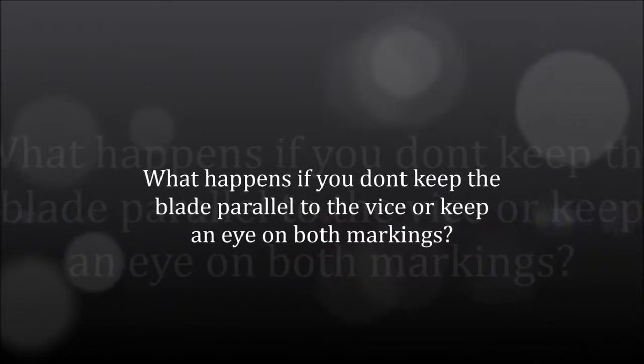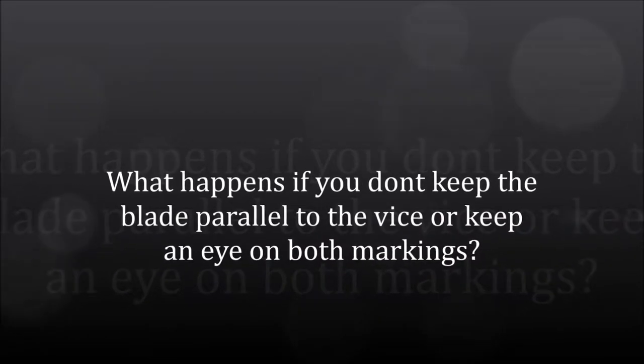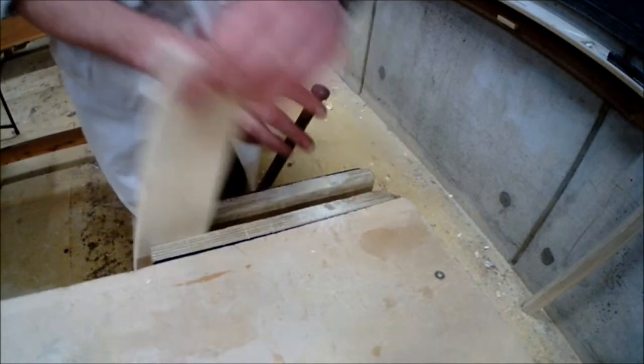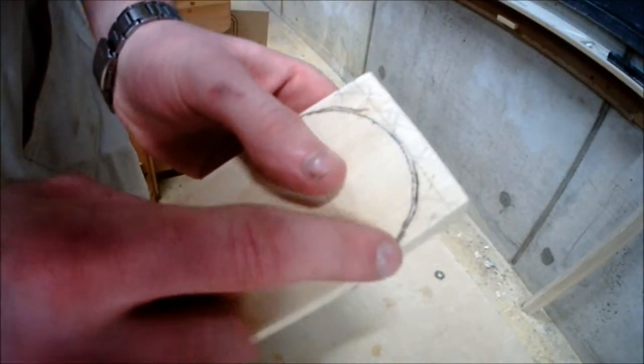So what happens if you don't keep the blade parallel to the vise or keep an eye on both sides? When you remove your piece after not doing these two key principles, you can see the different marking on your line.